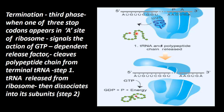The polypeptide chain then enters the cytoplasm of the cell, released from the ribosome and from the terminal tRNA. When the terminal tRNA is released from the ribosome, the ribosome disassociates into its two subunits.